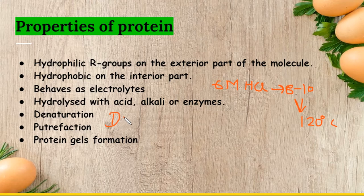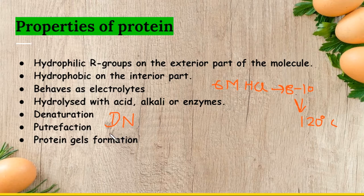Then we have putrefaction. Putrefaction involves decarboxylation or deamination, meaning changes in flavor or texture by the involvement of microbial proteases, causing changes in flavor, texture, and properties.